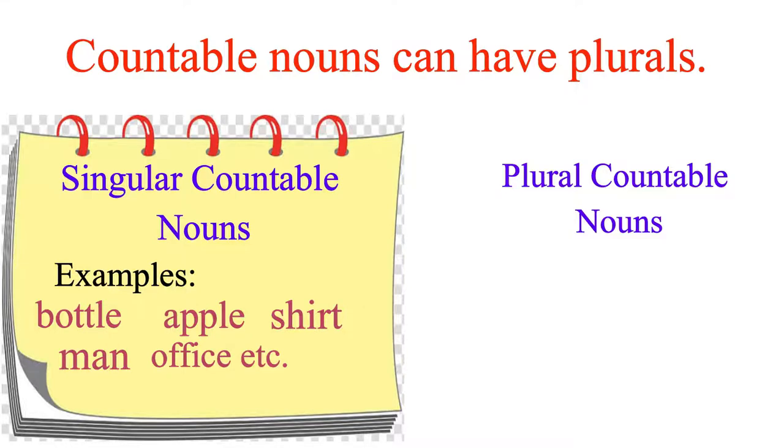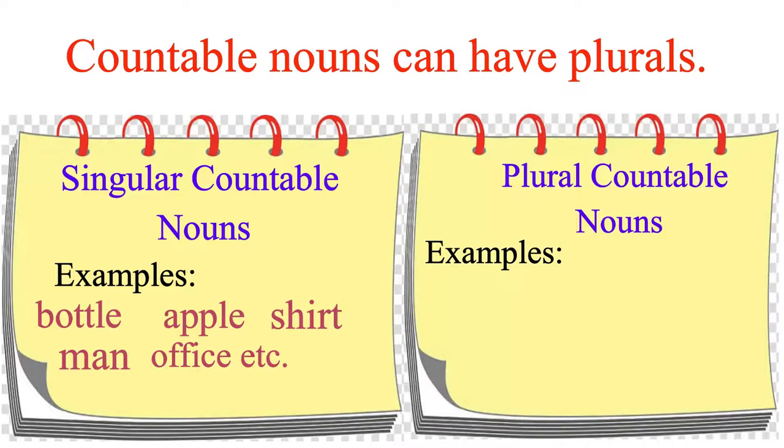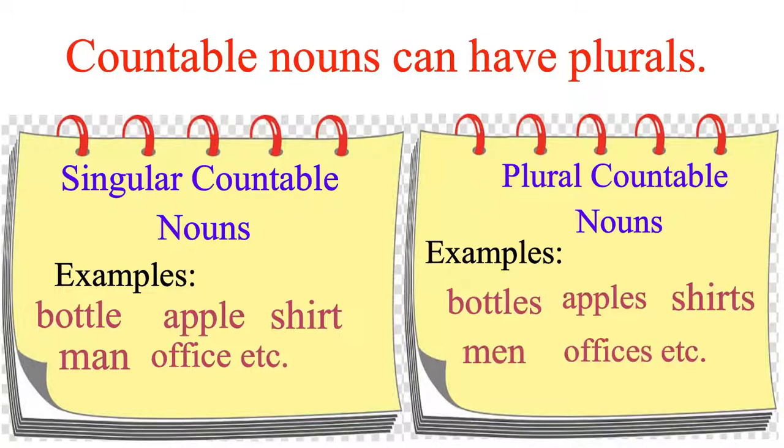Examples of plural countable nouns are bottles, apples, shirts, men, offices, etc.